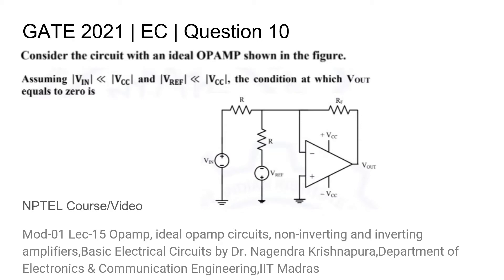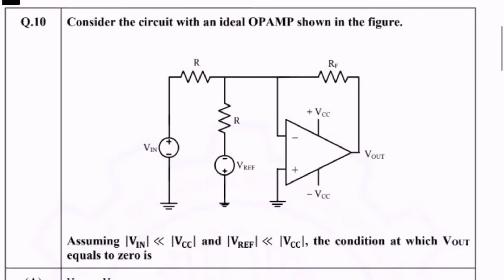This is question 10 from the GATE 2021 EC paper where we are given an ideal op amp and are asked to find out the condition at which Vout is equal to 0. Underneath the question you will find the title of the NPTEL course or video relevant to this topic. So let us proceed with solving this problem.